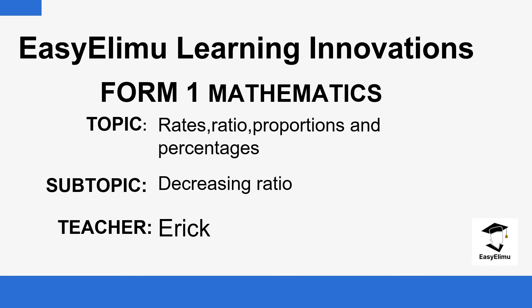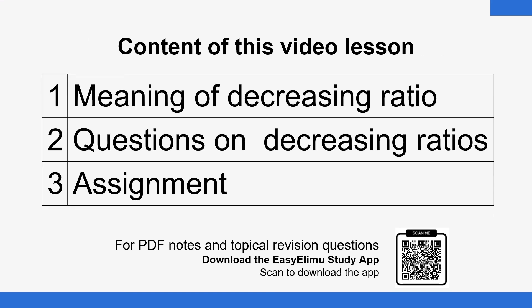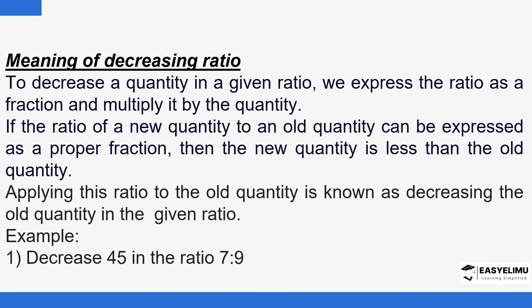We want to look at decreasing ratios and see how to go about it, using a few questions as illustrations. At the end of the lesson we'll give you some assignments to help you practice and gauge your understanding. To decrease a quantity in a given ratio, we simply express the given ratio as a fraction and then multiply that fraction by the given quantity to find the new quantity.